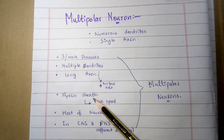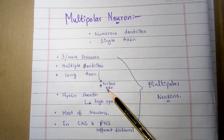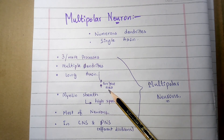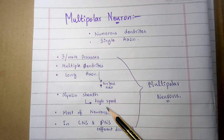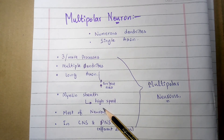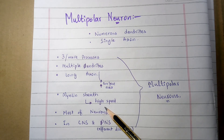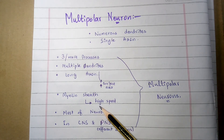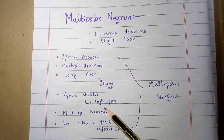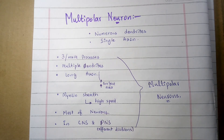The dendrites and their branches provide additional surface area for axons of other neurons to form synapses. The axons of multipolar neurons are often very long and conduct action potentials throughout the brain, down the spinal cord, and along the nerves. Axons are often covered by a myelin sheath, which is a series of Schwann cells covering the axon. Most of the neurons present in the human body are of the multipolar type.